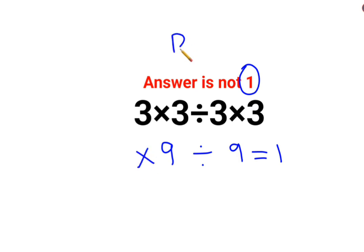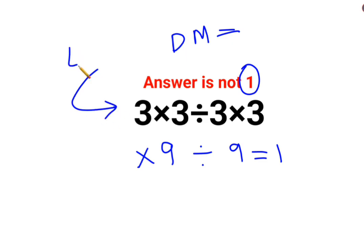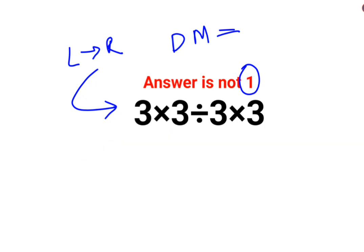Please understand, division and multiplication always hold equal precedence. So in sums like these, what you have to do is just go from left to right. Whatever operation happens first on your left-hand side has to be done first. So first we will do 3 multiplied by 3, which is 9, divided by 3, multiplied by 3.